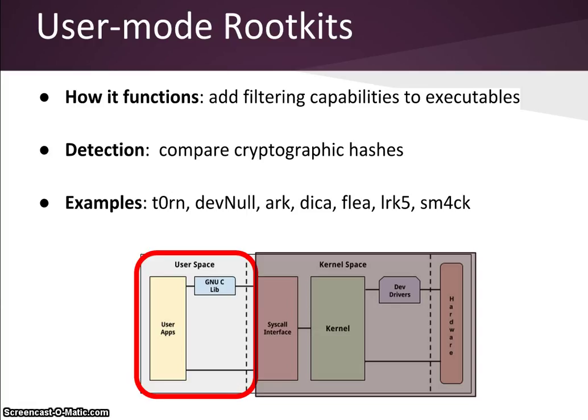User mode rootkit detection is trivial. The cryptographic hash of a binary file system directory will change when an attacker replaces or modifies it. User mode rootkits can be discovered easily if the system admin compares the cryptographic hash with known good hashes.